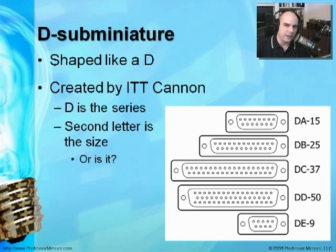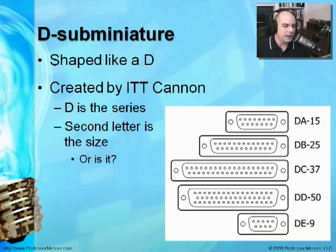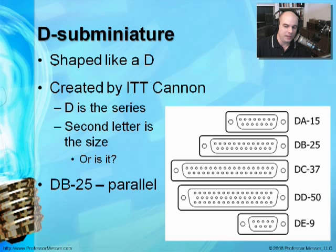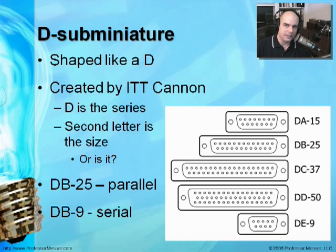This was created by a company called ITT Canon. The most common one that everybody knows about is the DB25 — it was one of the first types of DB connectors that was used. When later versions came out that were different sizes, we ended up calling it a DB connection. So that DB25 was parallel; we called the DB9 the serial connector, which is really a DE9 — the E size of the D connector.